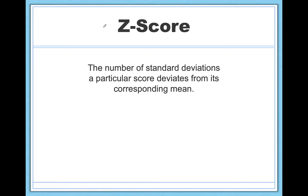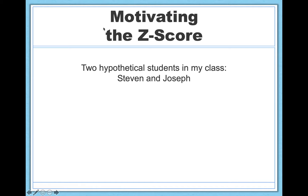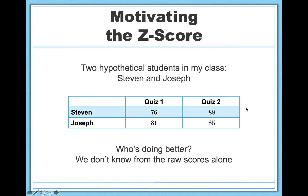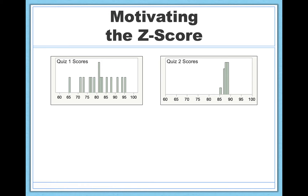So let's learn a little bit more about the z-score via an example. Let's say I have two hypothetical students in my class, Stephen and Joseph. Stephen and Joseph have taken two quizzes so far. Stephen did worse than Joseph on quiz 1, but better than Joseph on quiz 2. So here's my question: overall, who's doing better in the course? It's kind of hard to say. We also have to take other information into account — were these quizzes equal in difficulty and in terms of how other students tended to do?